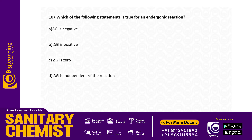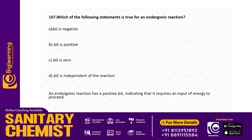Which of the following statements is true for an endergonic reaction? Options: delta G is negative; delta G is positive; delta G is zero; delta G is independent of the reaction. Answer: Delta G is positive.